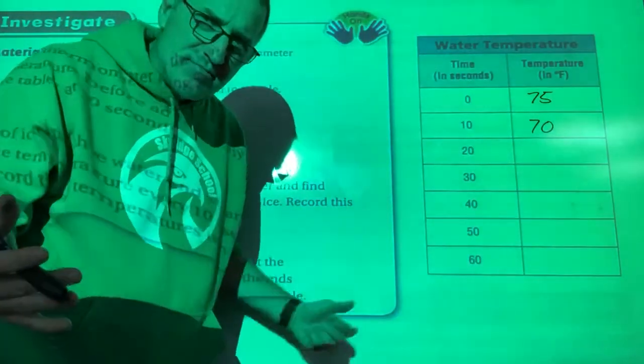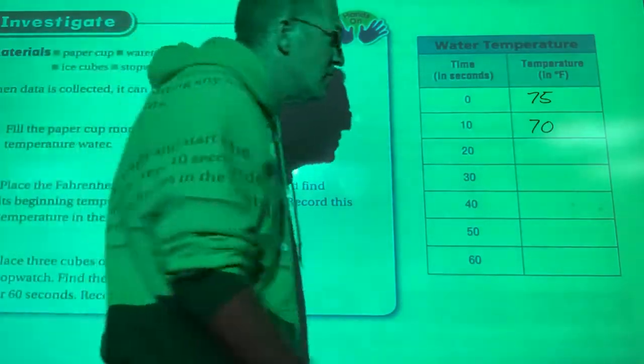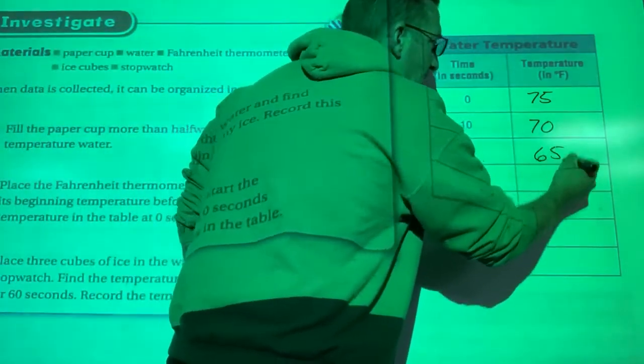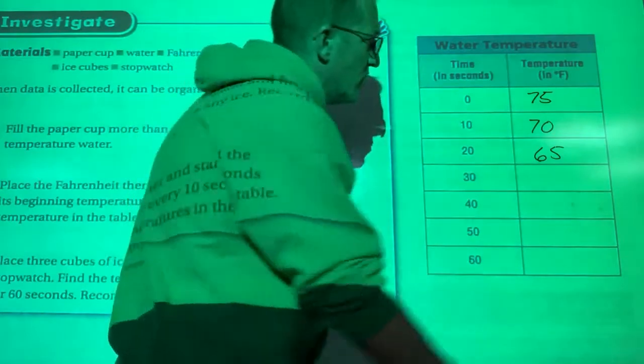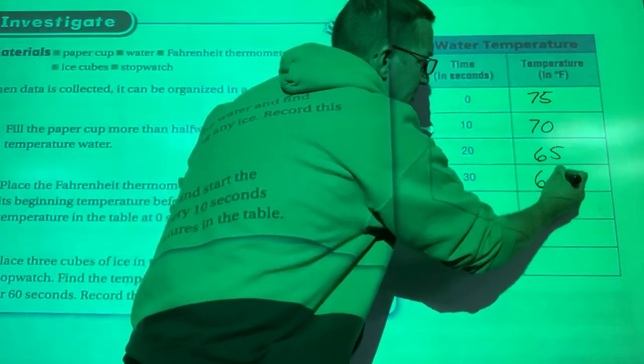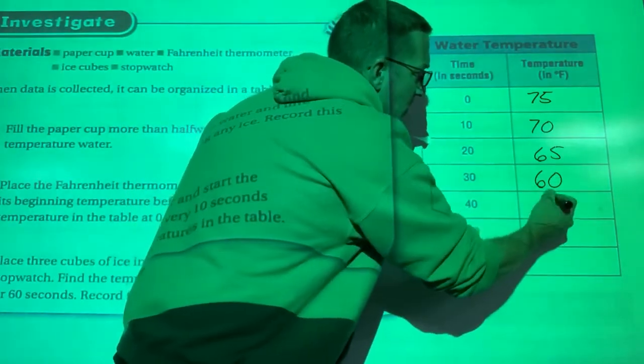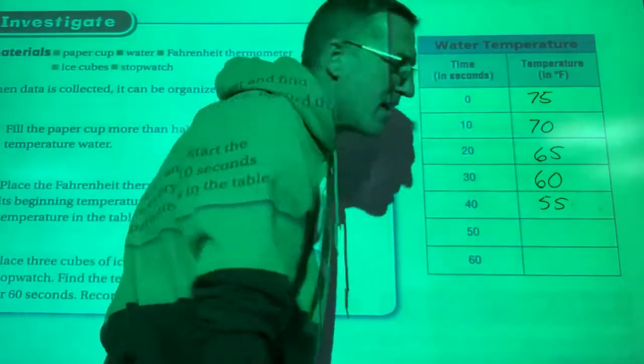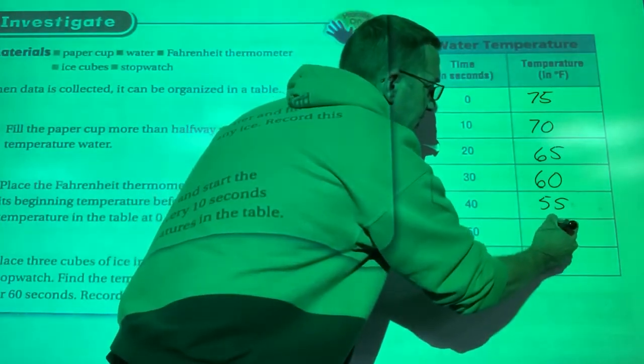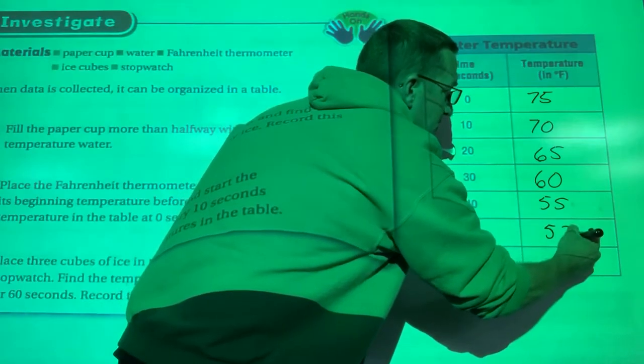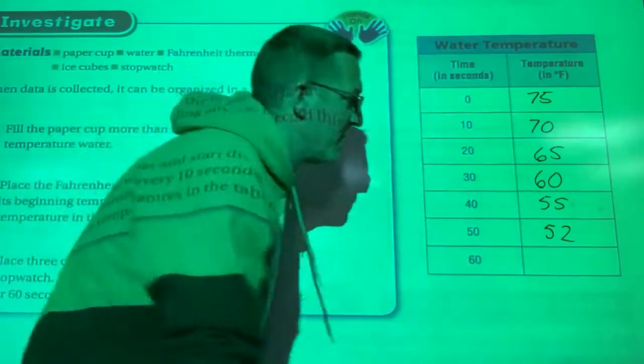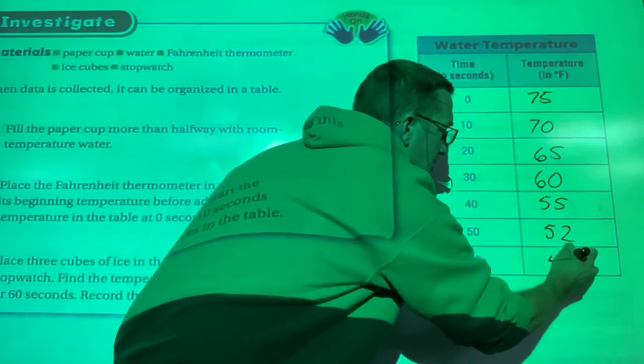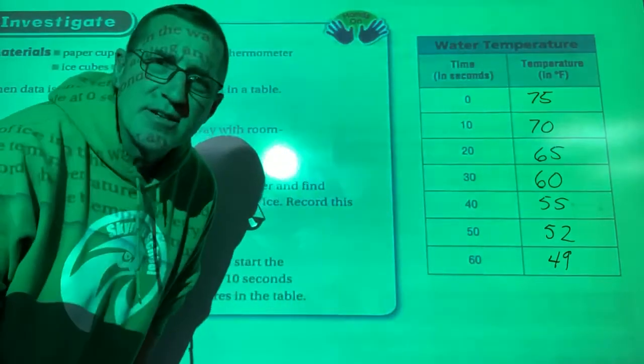10 more minutes, what do you guys think? 65? Let's try 65, and then so on. It's just gonna get cooler and cooler and cooler as we go. Let's go 60, then we can go 55, then maybe it starts to slow down a little bit, gets down to 52, and then maybe finally 49. Okay, so that's our data table.